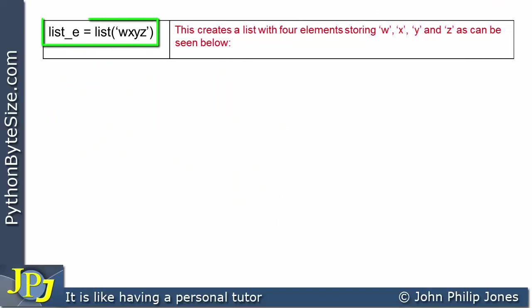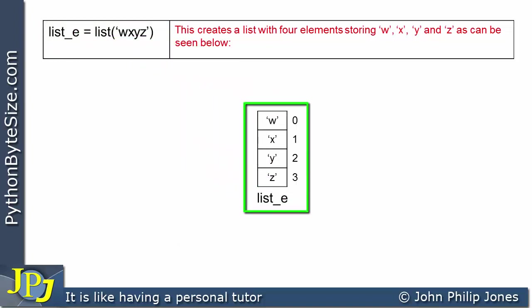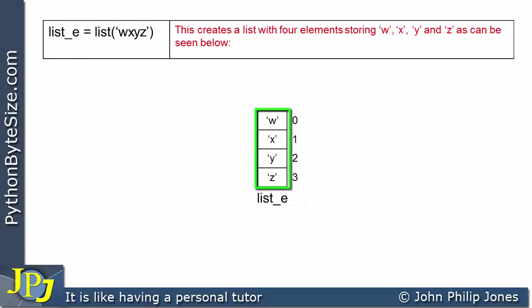Here's another example of a program statement that creates a list. list_e is assigned by calling the constructor for the list class, and we're passing in 'WXYZ' as a string. This is going to produce a four-element list containing W, X, Y, and Z. You can see that W is in the first element, X in the second element, and so on.